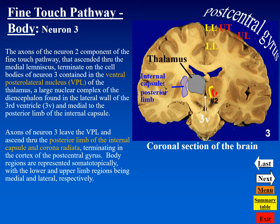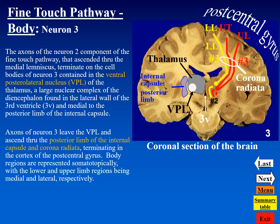In this coronal section of the brain, we follow the axons of neuron two in the fine touch pathway as they terminate upon the ventral posterior lateral nucleus of the thalamus, synapsing on cell bodies of neuron three. Axons of neuron three project to the cerebral cortex via the posterior limb of the internal capsule and the corona radiata. They end upon neurons in the postcentral gyrus in a somatotopic manner, with the upper limb most laterally represented and the lower limb most medially, extending onto the medial surface of the hemisphere.